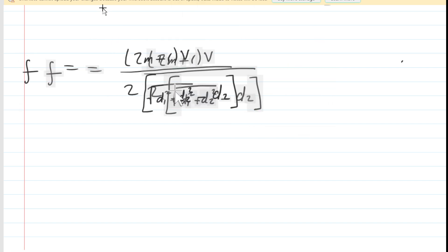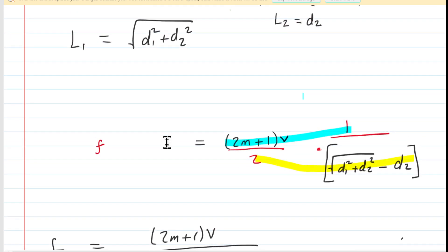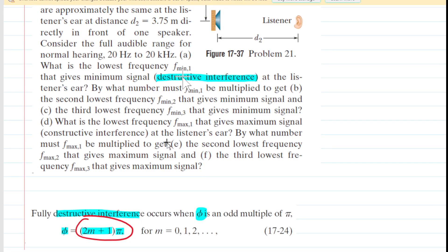And let us not forget that m can be any one of the following values. So in part a, we wanted, let's see, we wanted a lowest possible frequency. And then in part b and c, we're going to want the second lowest and the third lowest.